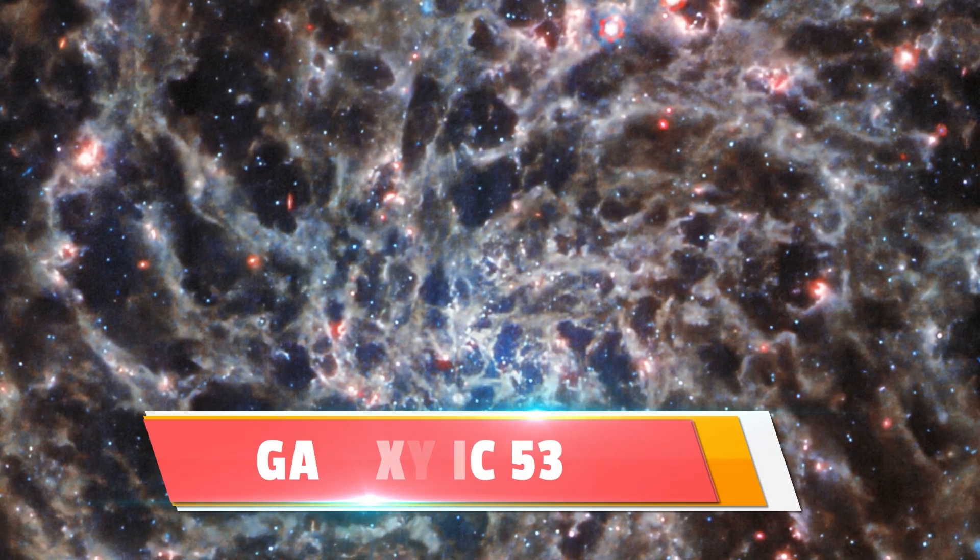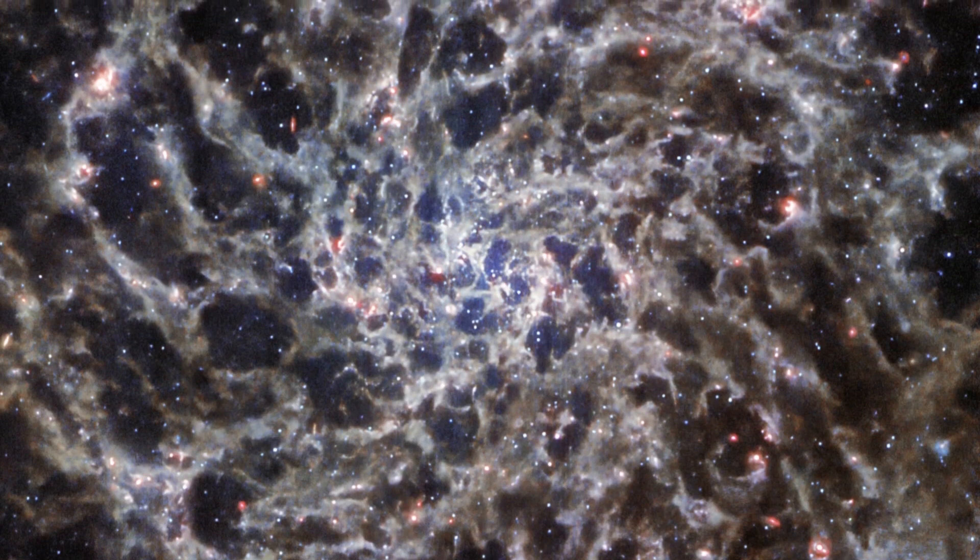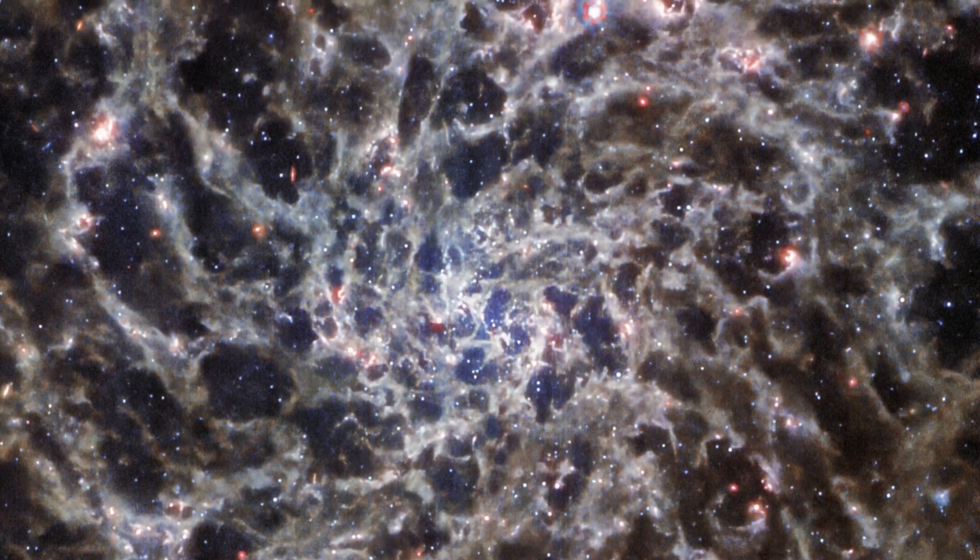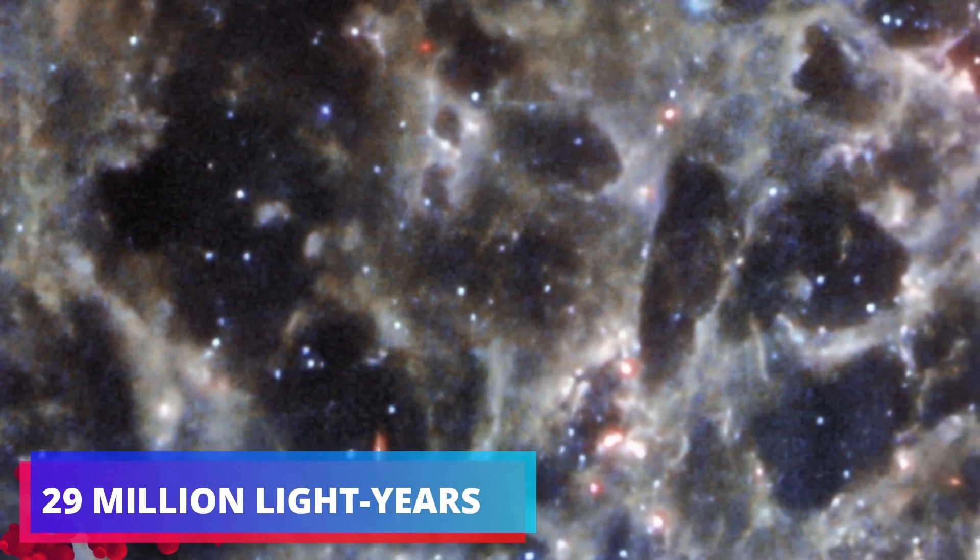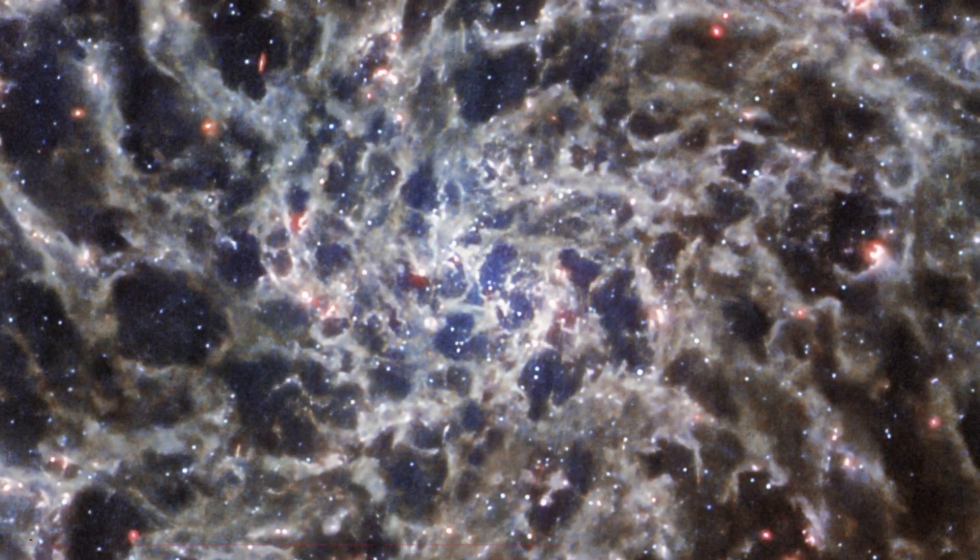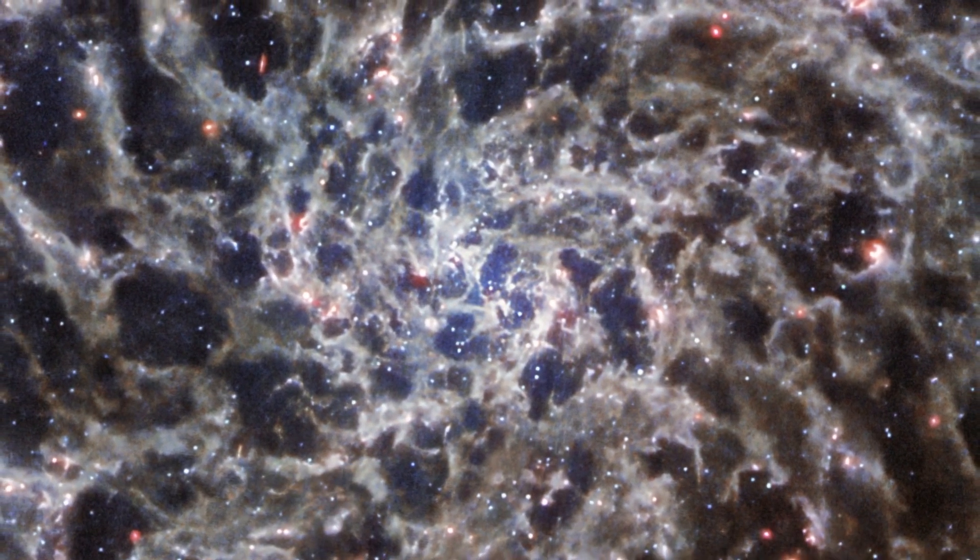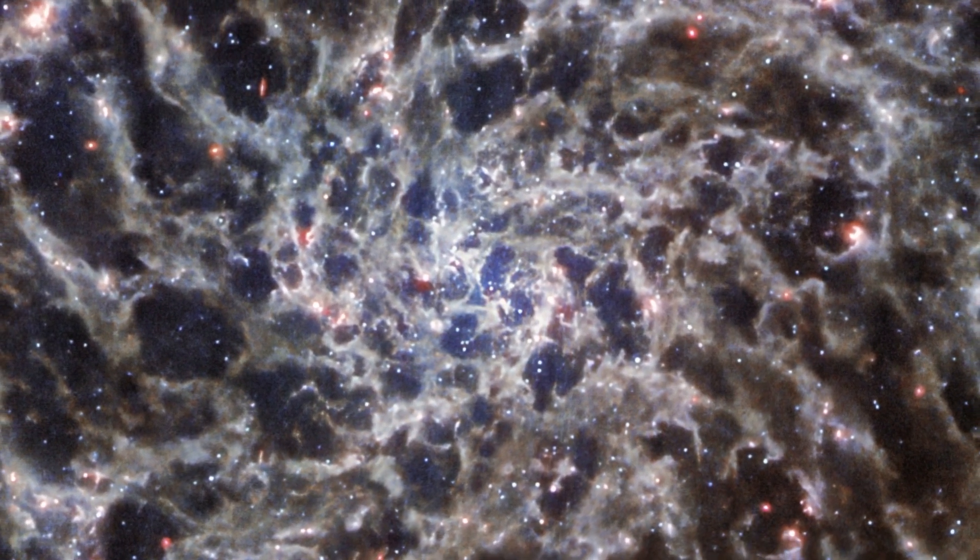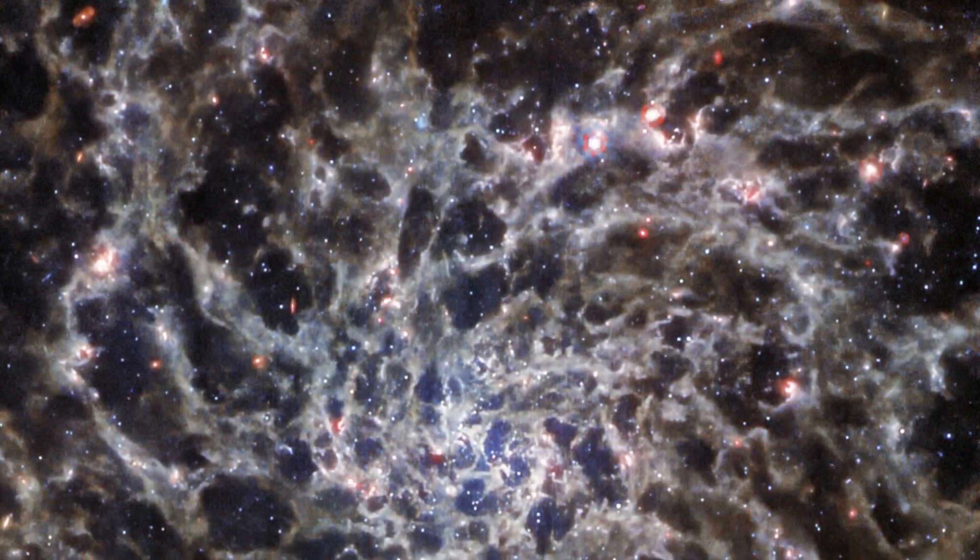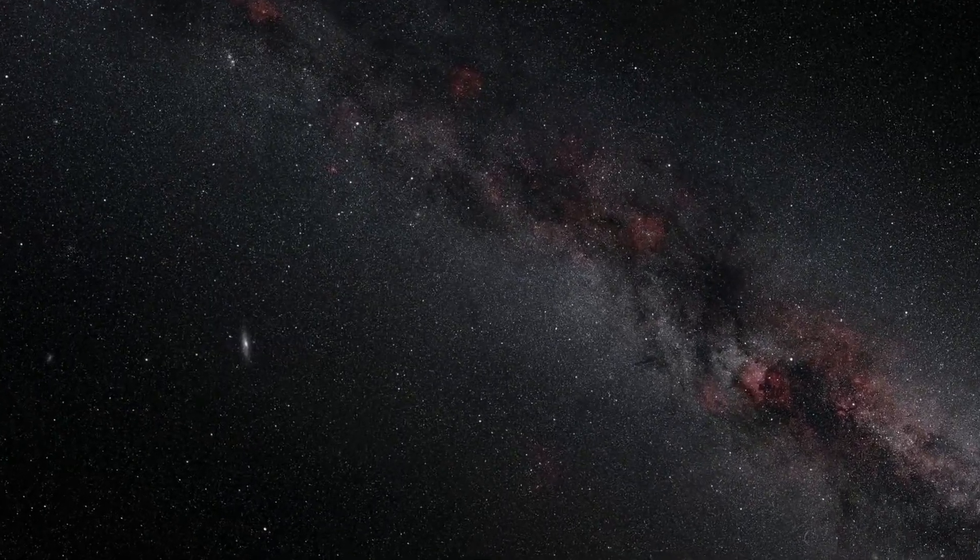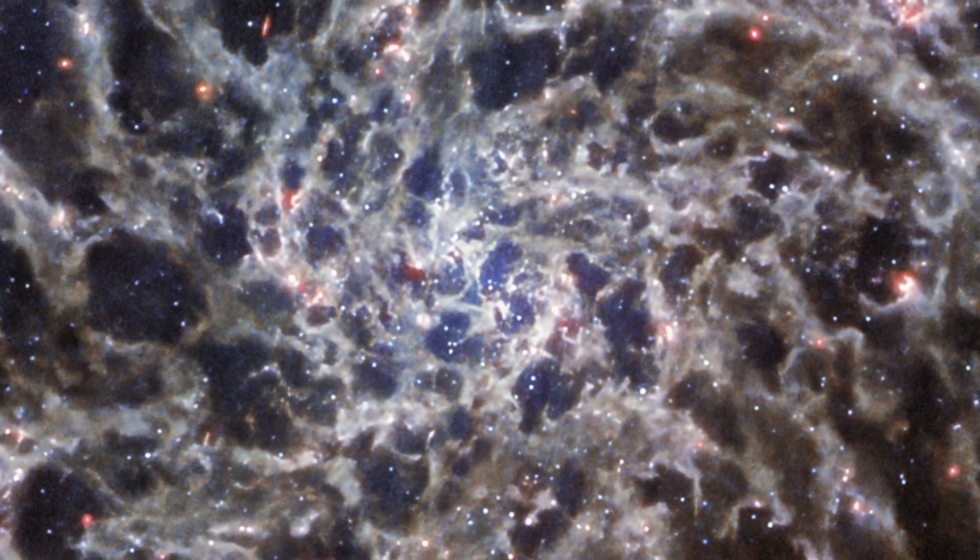This scary image of the IC 5332 by Webb's Mid-Infrared is best described as the bones of a galaxy. This phenomenal cosmic place is situated over 29 million light-years away and measures about 66,000 light-years across. This makes it slightly larger than our Milky Way. The image was captured in the 5-28 nanometer wavelength range and shows gray cobwebs in the shape of a spiral. Experts describe these elegant threads as gases swirling throughout the galaxy.